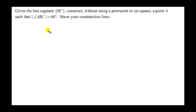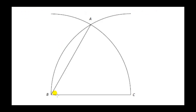We will construct an angle of 60 degrees just using a compass and straight edge. We are given the line segment BC, and we want to find a point A such that angle ABC is 60 degrees. To find point A, we put our compass point at B, open the compass to a radius BC, and draw an arc centered at B with radius BC.